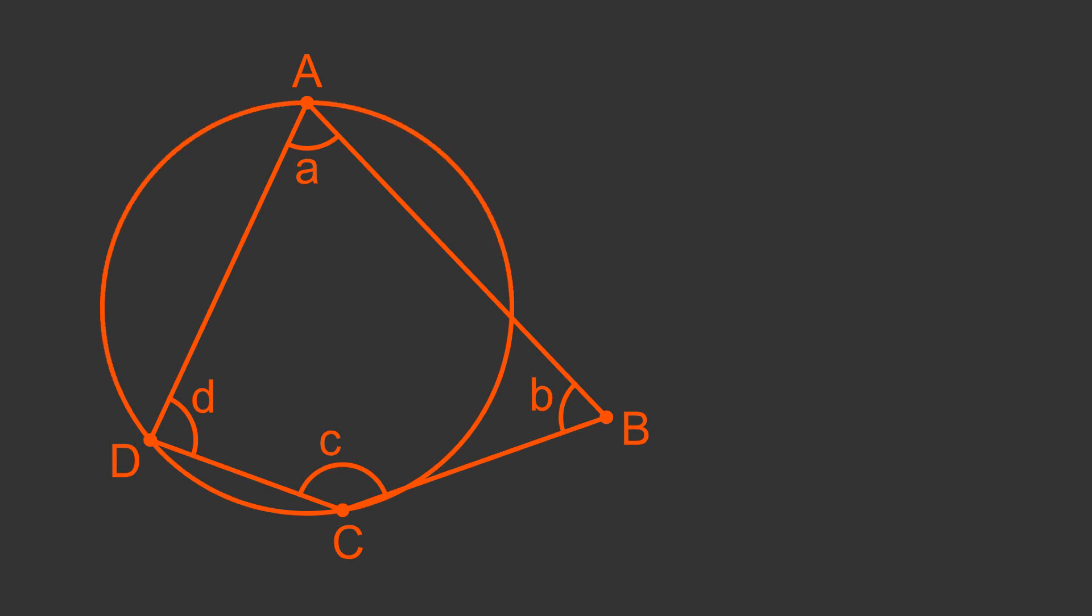The converse is also true. If the quadrilateral is not cyclic, then the opposite angles do not add up to 180 degrees. For example, this quadrilateral is not cyclic because corner B is outside the circle that includes A, C and D. In fact, in this case, B plus D is less than 180 and A plus C is greater than 180.